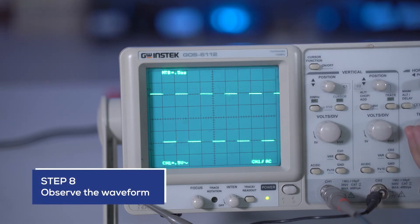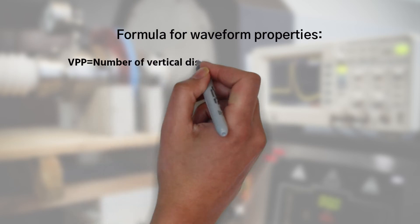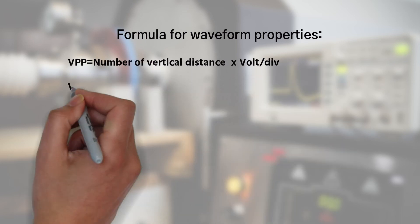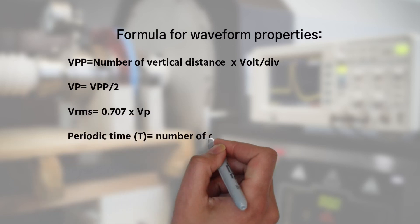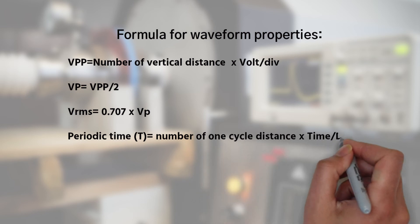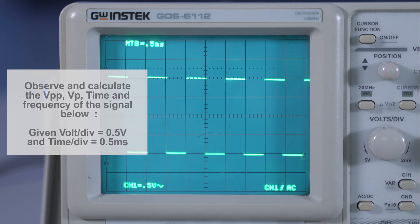Observe the waveform that appears. This is all the steps to calibrate the oscilloscope. Let's try to observe the signal. Observe and calculate the VPP, Vp, time period, and frequency of the signal shown.